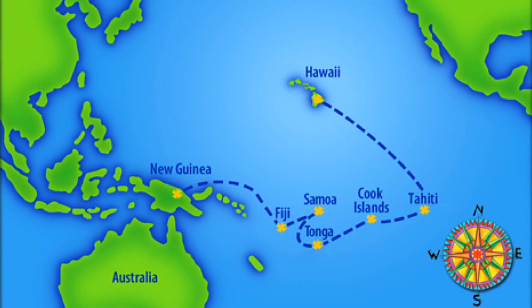Around the year 800, the Polynesian people living in the South Pacific — on islands like Bora Bora, Fiji, and Tahiti — made an epic voyage by canoe a thousand miles to the north and arrived on Hawaii, settling it. How they did this is a matter of speculation, but the Polynesian people of the South Pacific are considered some of the most daring, amazing seafarers in all of world history. Hawaii was settled by human beings for the first time around the 9th century.